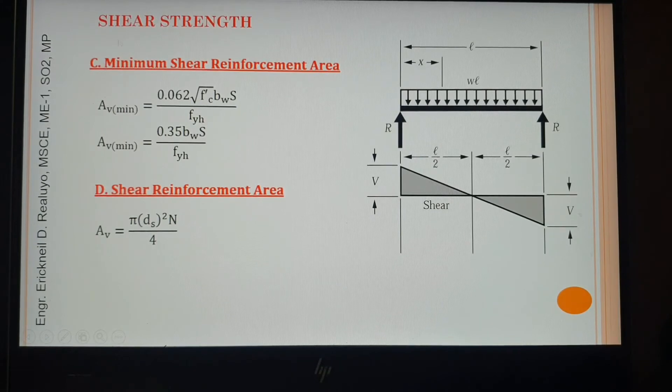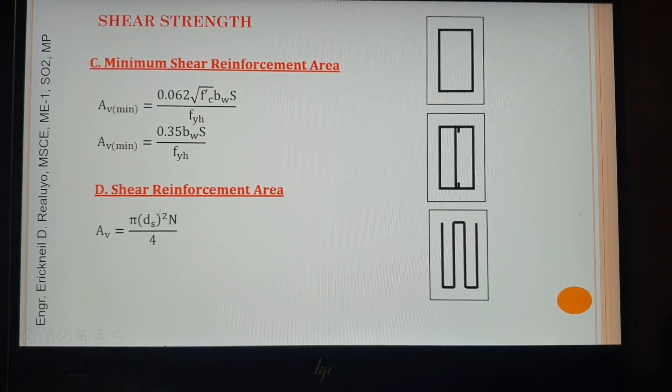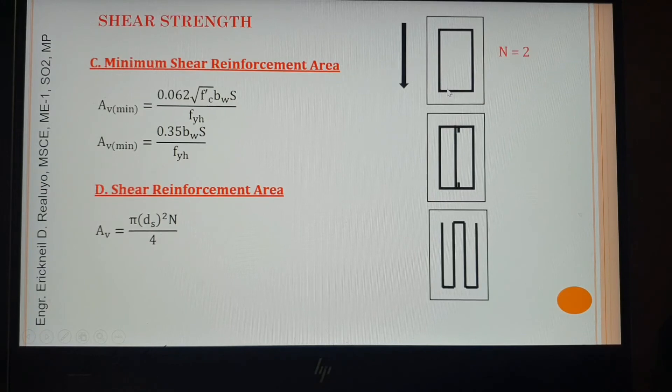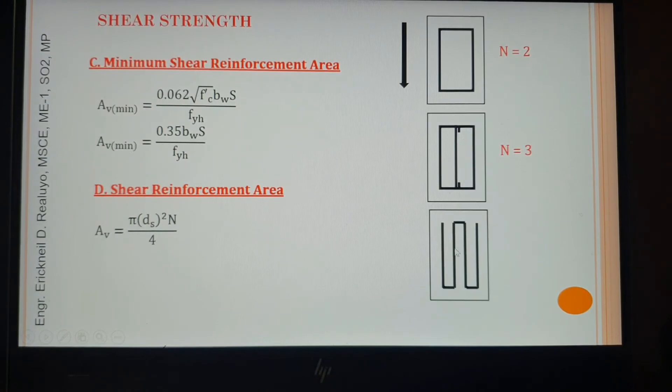But for those sections that are subjected to small values of shear force, what we are going to provide is minimum only. Now for this N value, this N is the number of legs that is parallel to shear force. Take a look at this three stirrup detailing drawings. For instance, we have a vertical shear force acting. In this case, in this drawing stirrup detailing, the N is 2 because the number of legs parallel to the shear force is 2. For this case, the N is 3 because the legs that are parallel to shear force are 3. Then for this, the N is 4. So this is very easy.